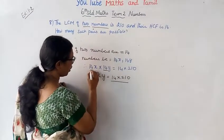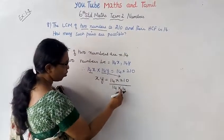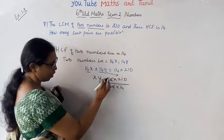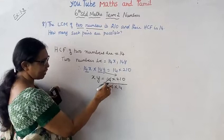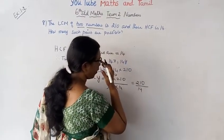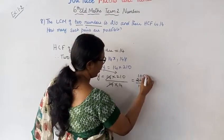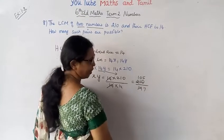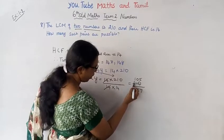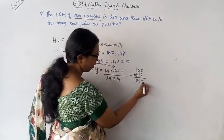Now we cancel. Dividing both sides by 14, we get x times y equals 105. Dividing 105 further: 105 divided by 7 gives 15, and 7 times 15 equals 105. So xy = 105.